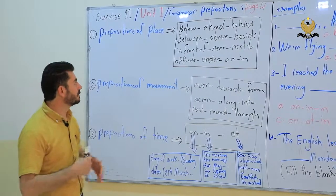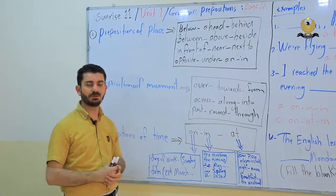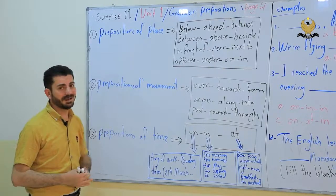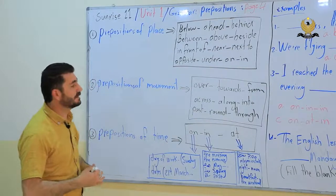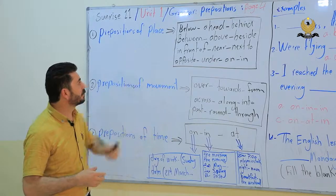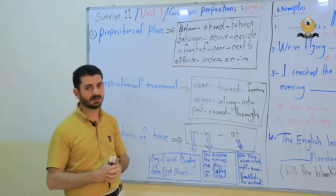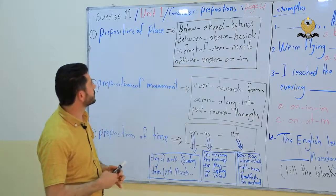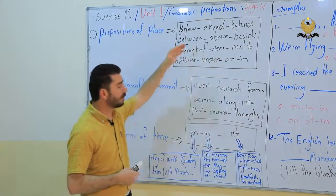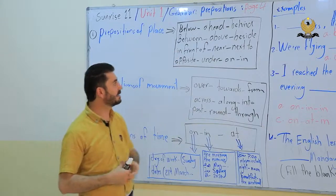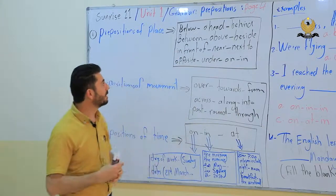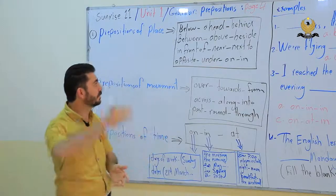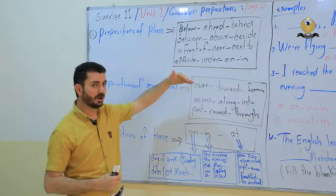Here are the prepositions of place. The prepositions of place are: below, ahead, behind, between, above, beside, in front of.